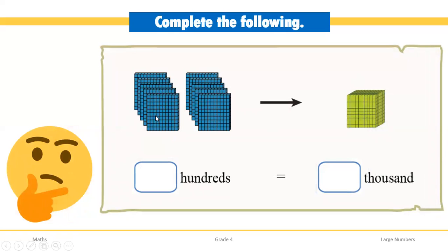Now we have so many plates. The first plate is made up of 100 blocks. The second, third, fourth, fifth, sixth, seventh, eighth, ninth, and tenth plates are also each made up of 100 blocks. So one plate is made up of 100 blocks, and these 10 plates — 10 hundreds — when combined together will be equal to 1000 blocks.